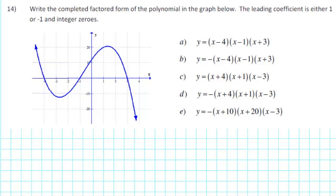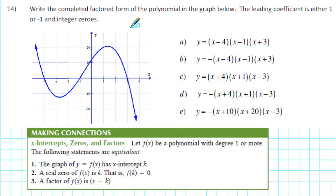Write the completed factored form of the polynomial in the graph below. The leading coefficient is either 1 or negative 1, and the polynomial has integer zeros. First, we need to recall that there's a relationship between the x-intercepts of the graph and the factors of the polynomial. If the graph of y equals f of x has an x-intercept at k, then a factor of the polynomial is x minus k.